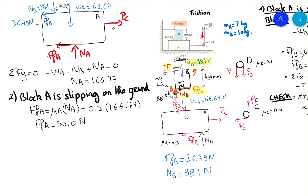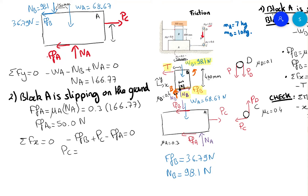We don't have the full dimensions to check tipping for block A — the block is very wide and H is very low, so it will not tip. Now sum of forces on X equals 0: minus FFB plus PC minus FFA equals 0. So PC equals 36.79 plus 50.0, giving PC equals 86.8 N.